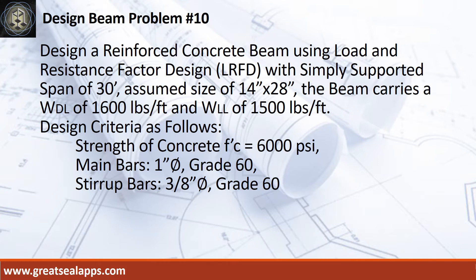Design a reinforced concrete beam using load and resistance factor design with a simply supported span of 30 feet. Assume a size of 14 inches by 28 inches. The beam carries a uniform dead load of 1,600 pounds per foot and a uniform live load of 1,500 pounds per foot.